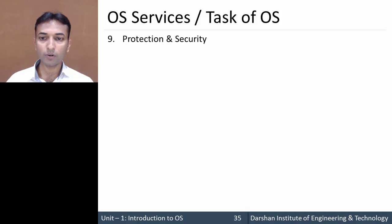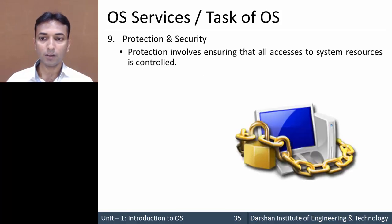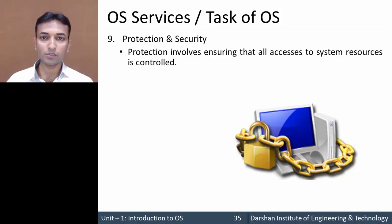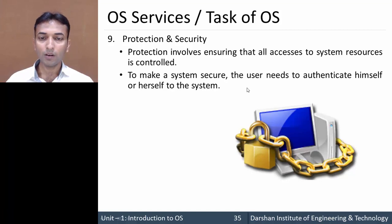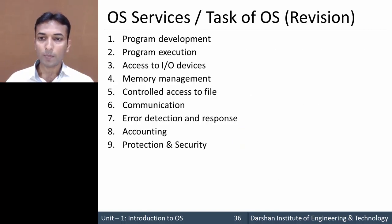The last service is protection and security. Protection involves ensuring that all access to system resources is controlled. To make the system secure, the user needs to authenticate themselves; until a user is authorized, resources are not accessible. These are the different types of services provided by the operating system. Thank you very much.